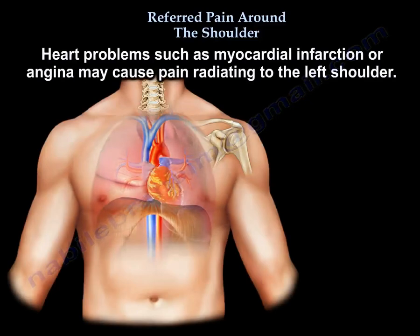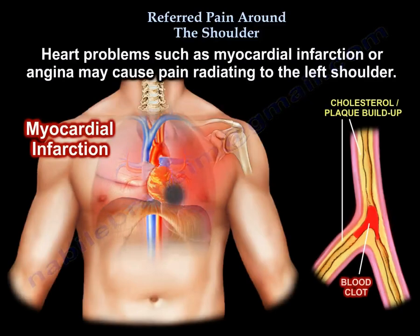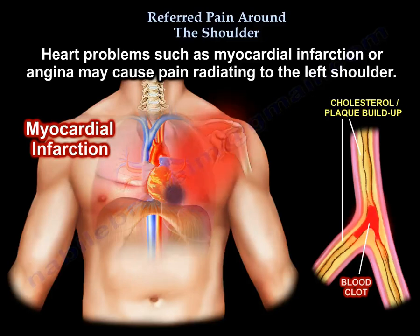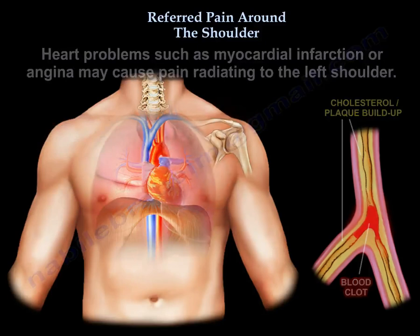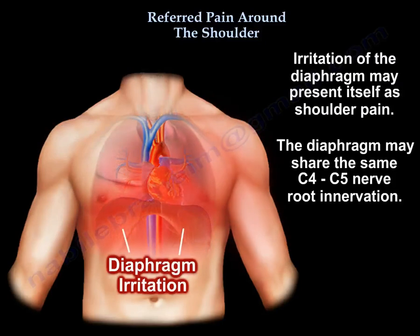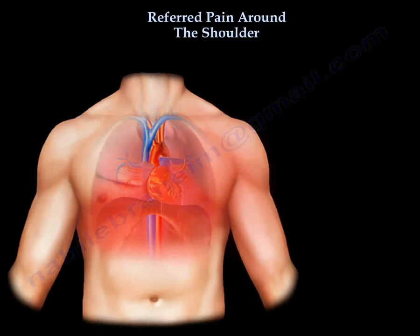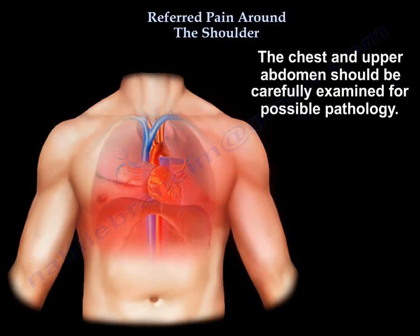Heart problems such as myocardial infarction or angina may cause pain radiating to the left shoulder. Irritation of the diaphragm may present itself as shoulder pain, as the diaphragm may share the same C4-C5 nerve root innervation. The chest and the upper abdomen should be carefully examined for possible pathology.